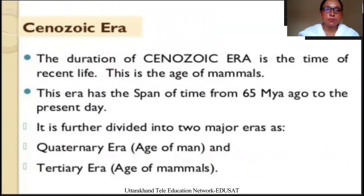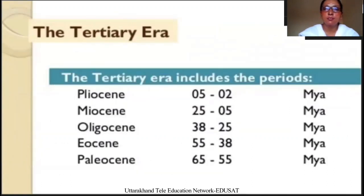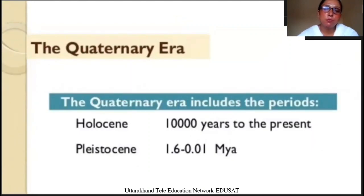The last era is also known as the Cenozoic era, commonly known as the era of new life. The duration of the Cenozoic era is the time of present life. This is the age of mammals. This era has the span of time from 65 million years ago to the present day. It is further divided into two major periods: the Tertiary period and the Quaternary period. The Tertiary era includes five periods: Pliocene, Miocene, Oligocene, Eocene and Paleocene. And the Quaternary era is divided into two periods: Pleistocene and Holocene.